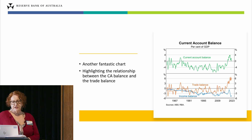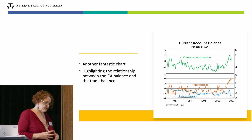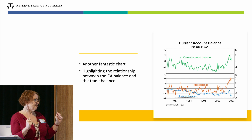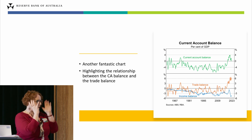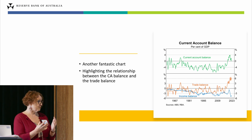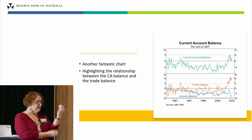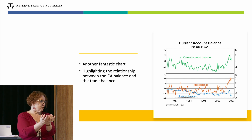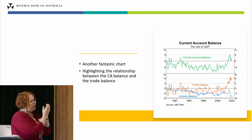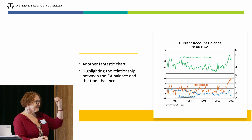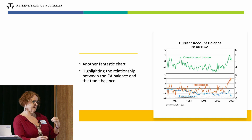Another chart highlights the relationship between the current account balance and the trade balance. When I present my students with the four sub-accounts of the current account, their brains start to fry. What often happens with how this data is reported is it's compressed into two key elements: trade — the balance on merchandise trade plus net services — and the net primary incomes and net secondary income sub-accounts. When you can then present this to students and show them that if you add together the orange line and the blue line, you'll get the green line, they can see how those pieces fit together to arrive at the current account balance.